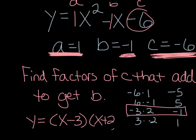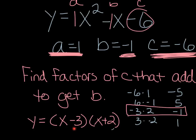Once you've found the pair, you use those as your p and q in your factored form. So your factored form is y equals x minus 3 times x plus 2. If you FOIL this back out: x times x is x squared, x times 2 is 2x, negative 3 times x is negative 1x, and negative 3 times 2 is negative 6. That matches what we started with. All you do is find factors of c that add to get b, then write x plus one factor times x plus the other factor.